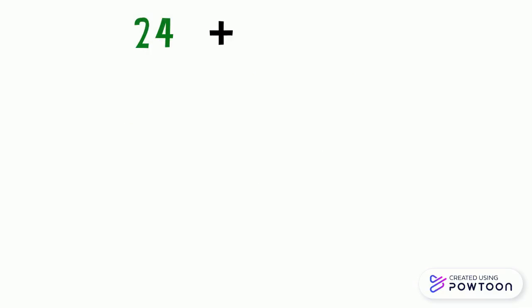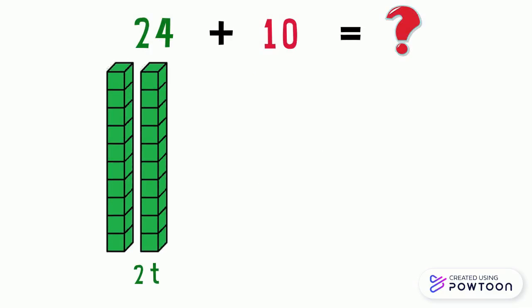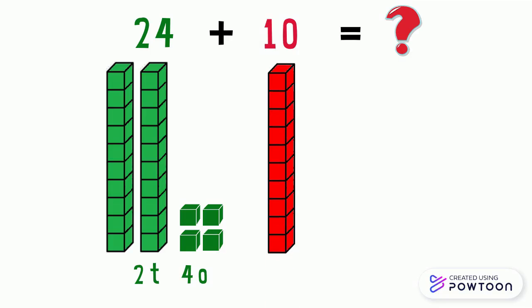What is 24 plus 10? The number 24 is made up of two 10s and four 1s. Add 10, which means we are adding one 10.